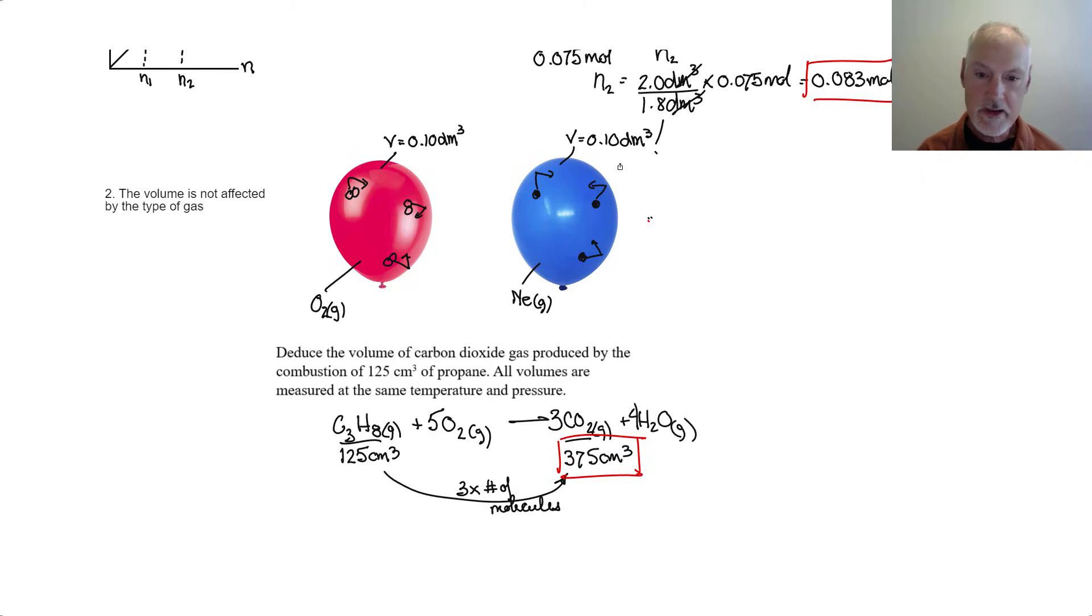So that's it. Two key ideas behind Avogadro's law. One is that the amount of gas is proportional to the volume of the gas. And second, the volume of gas is independent of the type of gas.